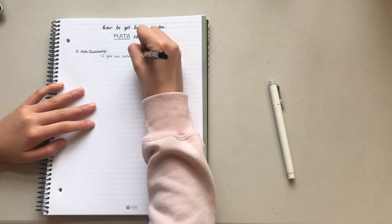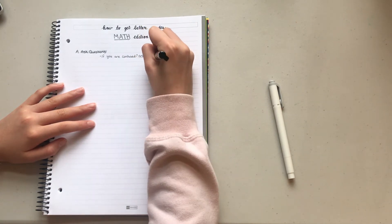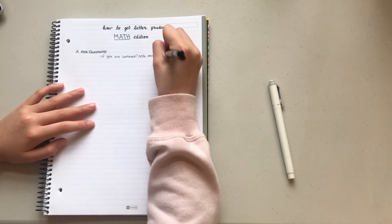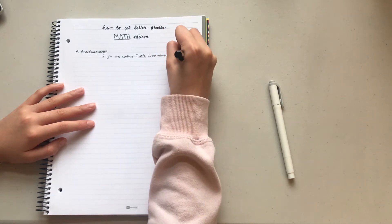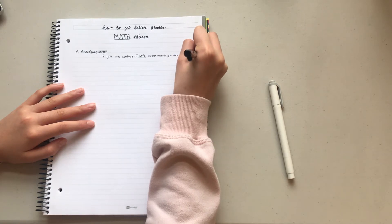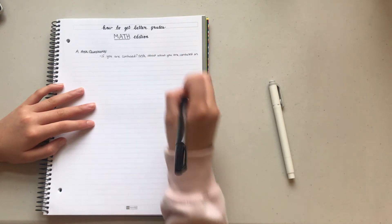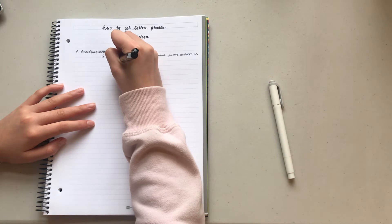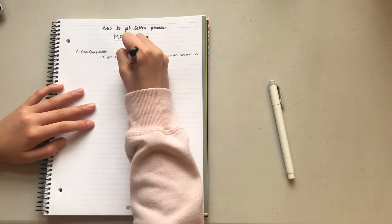First, you need to ask questions. If you are confused about anything in math—a problem, a concept, whether or not you have to include a step while solving a problem—ask. Math is very right or wrong, so you either get the question correct on a test or get it incorrect and lose points.